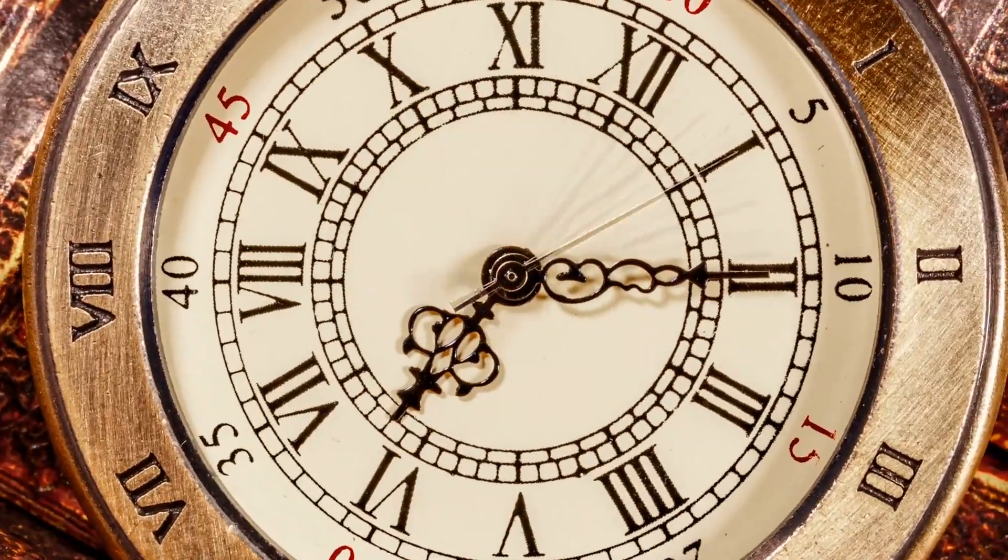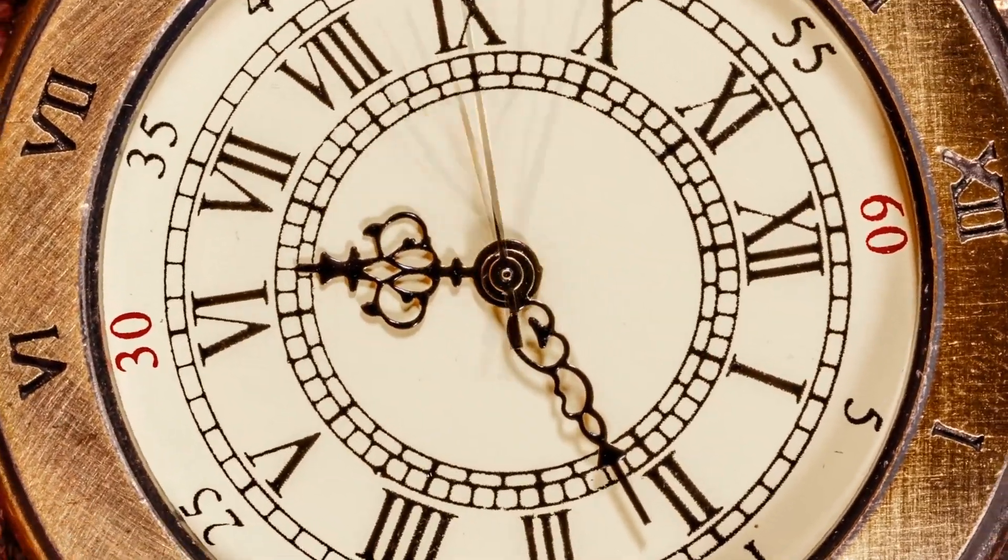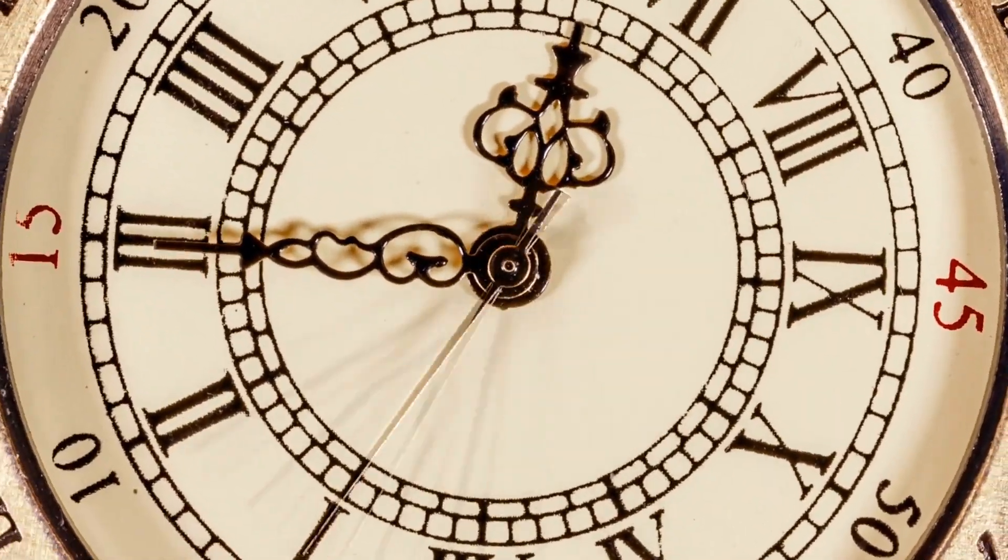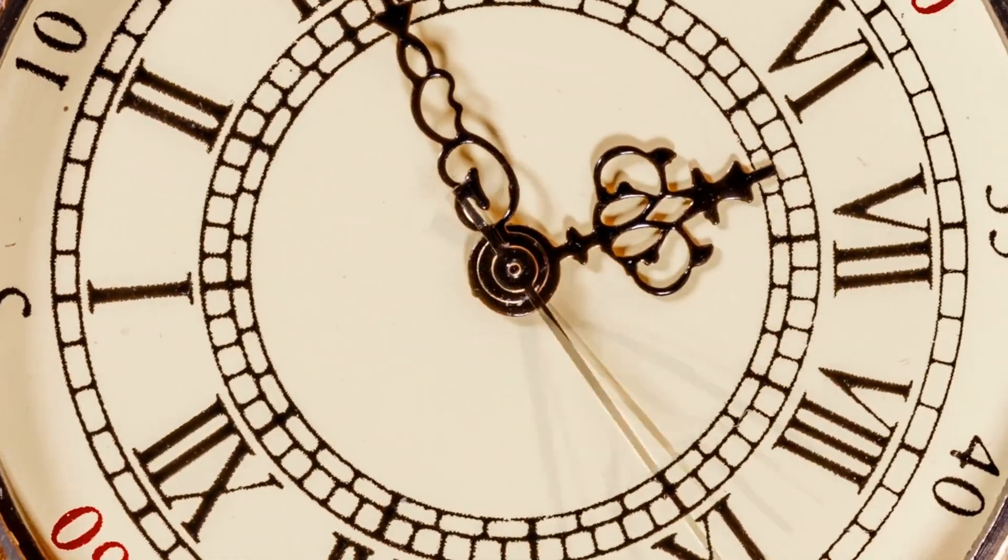Time slows down as you approach the speed of light, and when you reach it, time stops. For a photon, there is no time. Everything happens instantaneously. Trying to make a photon go faster than the speed of light is like bringing your car to a stop and trying to go slower. It can't be done.